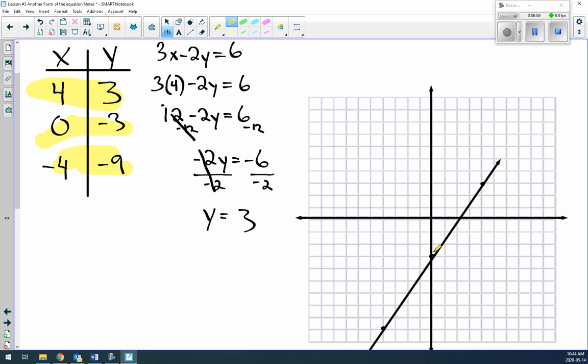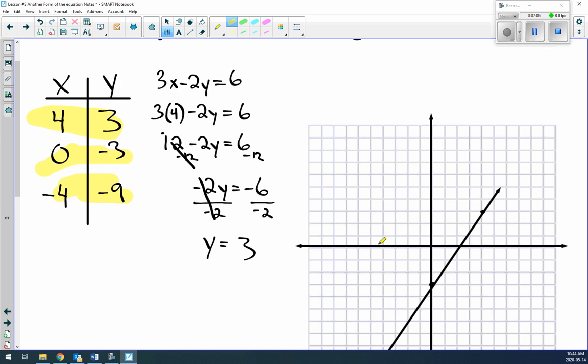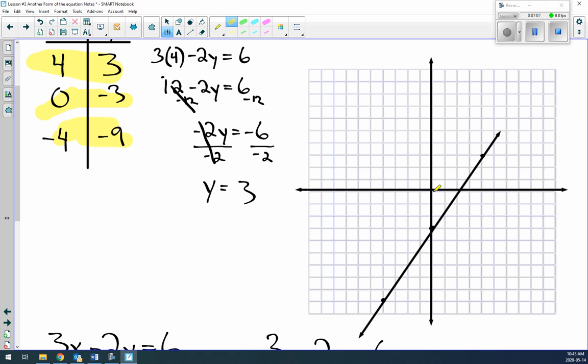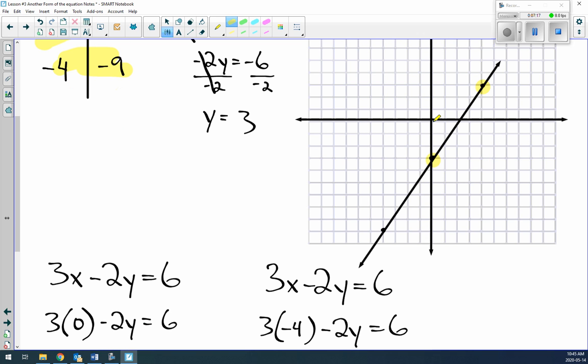Nice thing about it is because you did three points, you know you did it correctly if they form a straight line. So let's take a look. Start at the origin: 4, 3, over 4, up 3. There's our first point. 0, negative 3. 0 means we don't go left to right for x, but we go down 3. There it is. And negative 4, negative 9. We start at the origin, go over negative 4, down negative 9. And if you look, when we join all these points together, nice straight line so we know we did the math correctly.